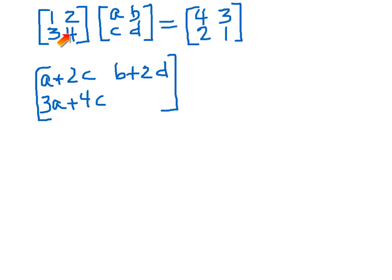And second row times the second column, 3B plus 4D. And I know that that's supposed to be equal to 4, 3, 2, 1.